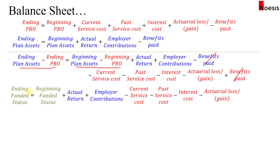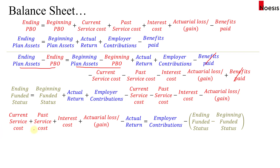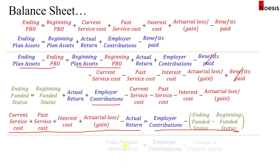The ending funded status equals the beginning funded status, plus actual return, plus employer contributions, minus benefits paid, minus current service cost, minus past service cost, minus interest cost, minus the actual loss or gain, plus benefits paid. The benefits paid terms offset each other. Rearranging, we get the cost components on the left-hand side: current service cost plus past service cost plus interest cost plus actual loss or gain minus actual return — note this is actual return, not expected. On the right-hand side: employer contributions minus the change in funded status. This is called the total periodic pension cost.